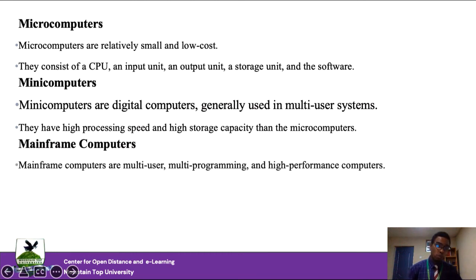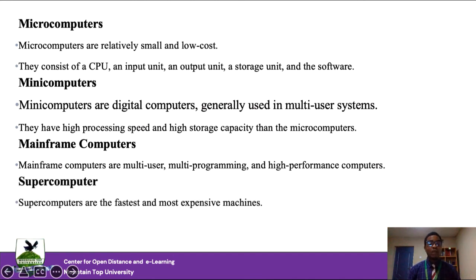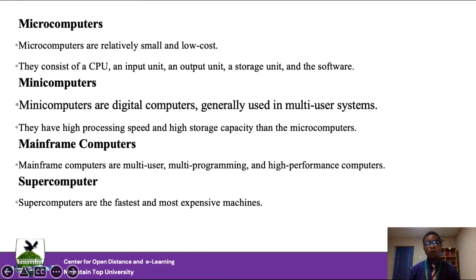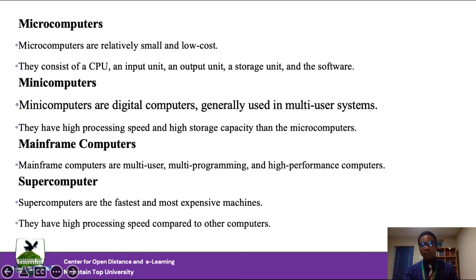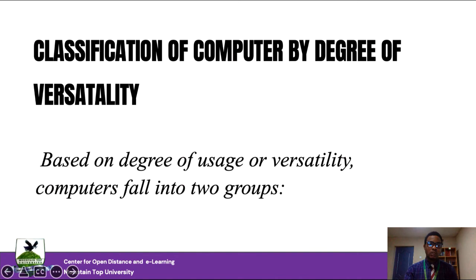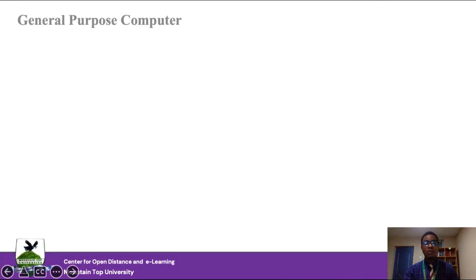Mainframe computers are much bigger than multi-user systems and can be used by multinational organizations. Supercomputers are actually the fastest and most expensive computers in the world. Depending on the size of the organization or the purpose for which it has been created, there is a particular class of computer available. We can also talk about computers in terms of their versatility — what we can use them to do.